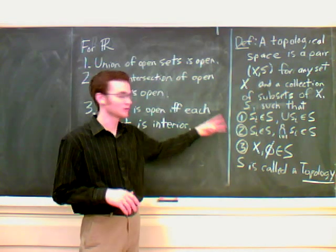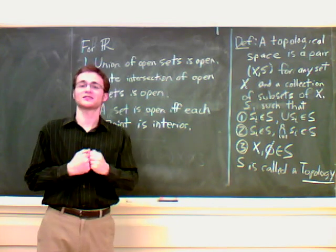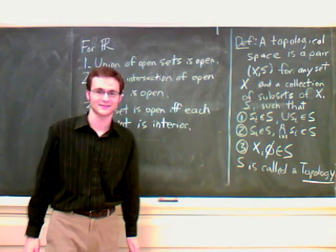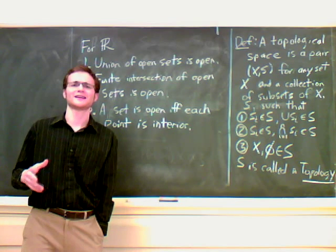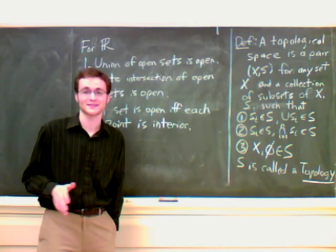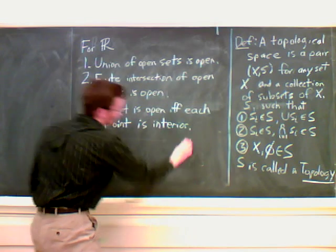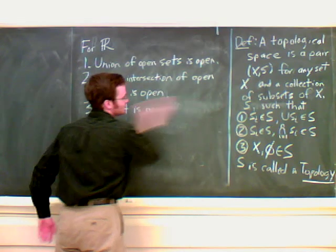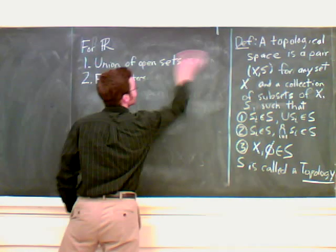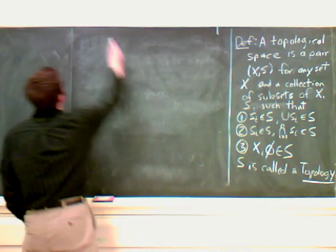As long as S follows those three properties, we call it a topology, and the things in it are open sets that we declared these to be what we want to call open sets. This is kind of a weird idea that it's kind of arbitrary. It's not based on some intrinsic properties of the space. So let's go over a few examples.